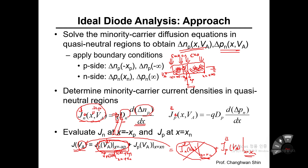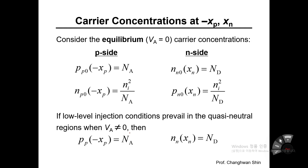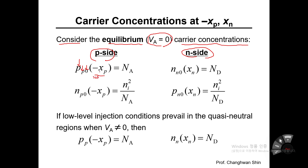Now let's dive into the three major steps in detail to obtain the ideal diode equation. First, we write down the carrier concentrations at x = -xp and x = xn. Consider thermal equilibrium (Va = 0). In the p-side, the hole concentration pp_not at x = -xp is the majority carrier concentration governed by the acceptor concentration Na.